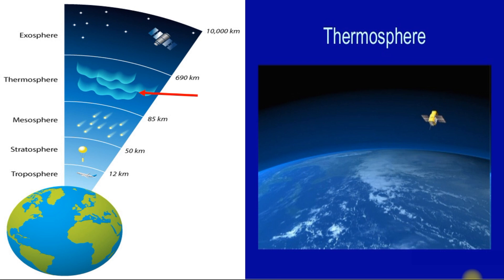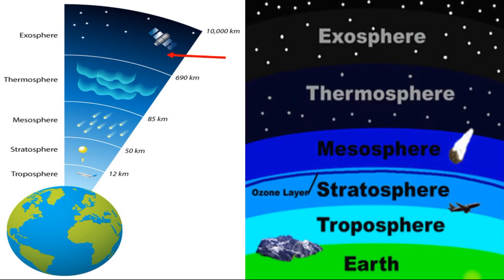Satellites orbit the Earth in the thermosphere. The fifth layer of the atmosphere is the exosphere, which separates the rest of the atmosphere from outer space. It contains gases like hydrogen and helium. These layers together protect and keep our planet warm and provide us oxygen to breathe.